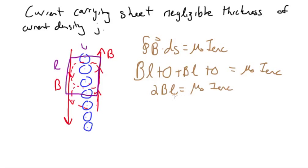Now we just have to figure out the I enclosed. We're given a current density J, so we have 2BL equals mu naught JL. L's cancel and we're left with B field equal to mu naught over 2 times the current density J. This is the magnetic field strength.